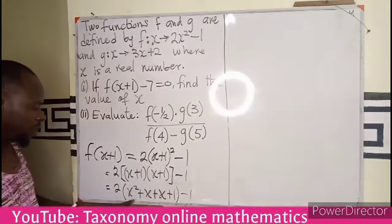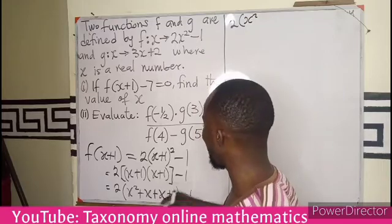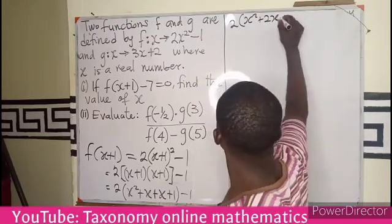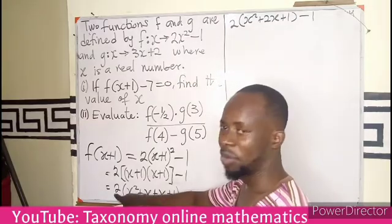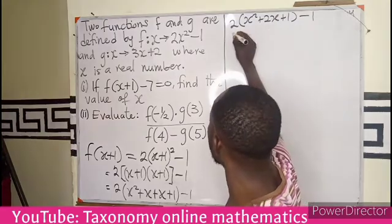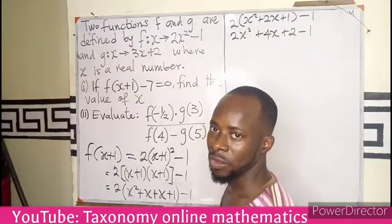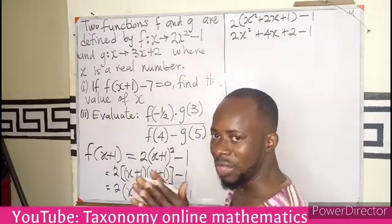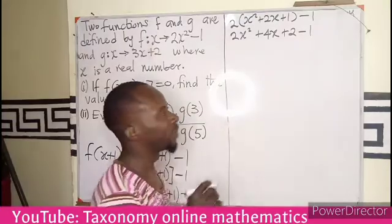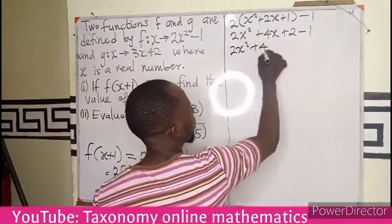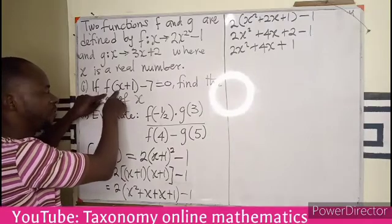Now we can simplify inside the bracket to have 2x squared. x plus x gives us 2x, then I have plus 1 minus 1. Don't forget, I did not use this minus 1 to cancel this, because this is also supposed to be multiplied by 2. So now I expand this to have 2x squared plus 4x plus 2 minus 1. You perform the operations inside the bracket first, then use the coefficient to multiply, then perform your subtraction: 2 minus 1 gives me 1. So f of x plus 1 equals 2x squared plus 4x plus 1.